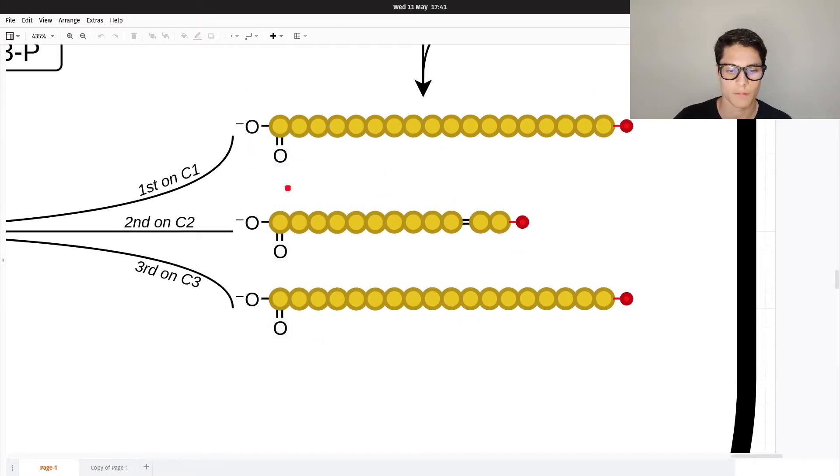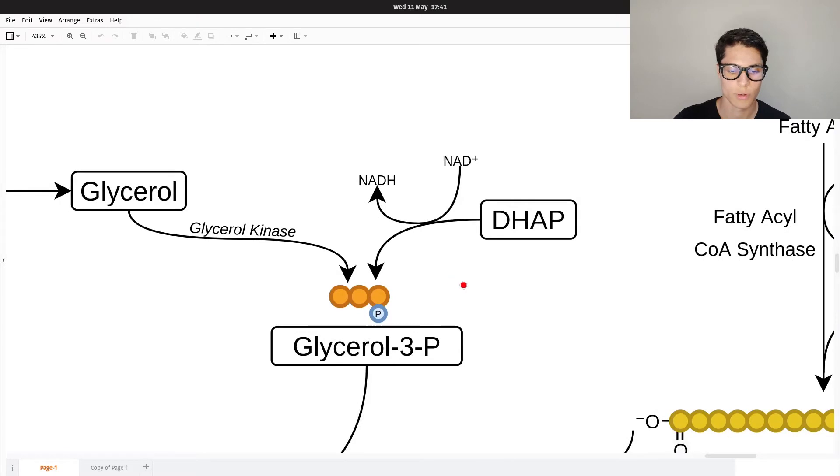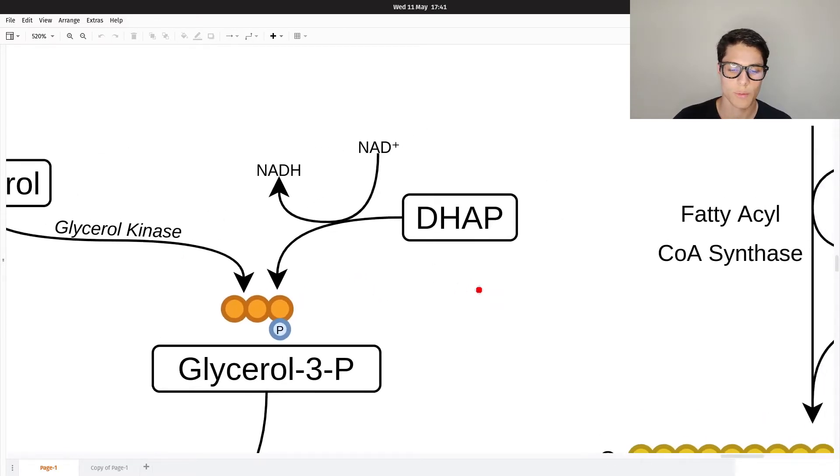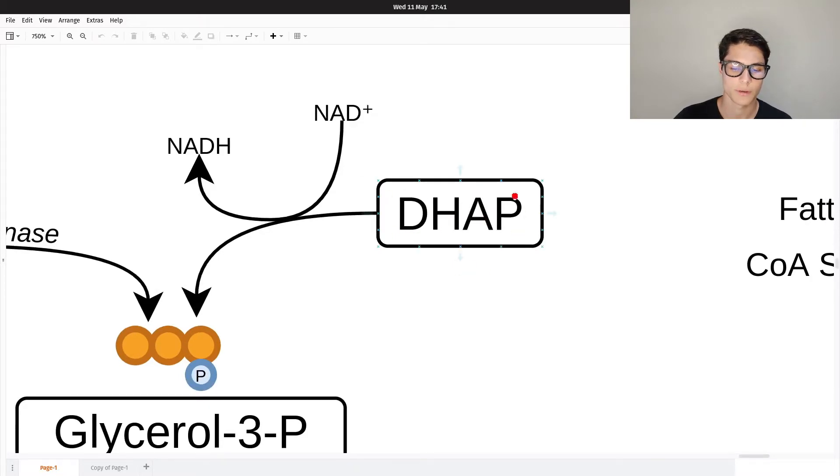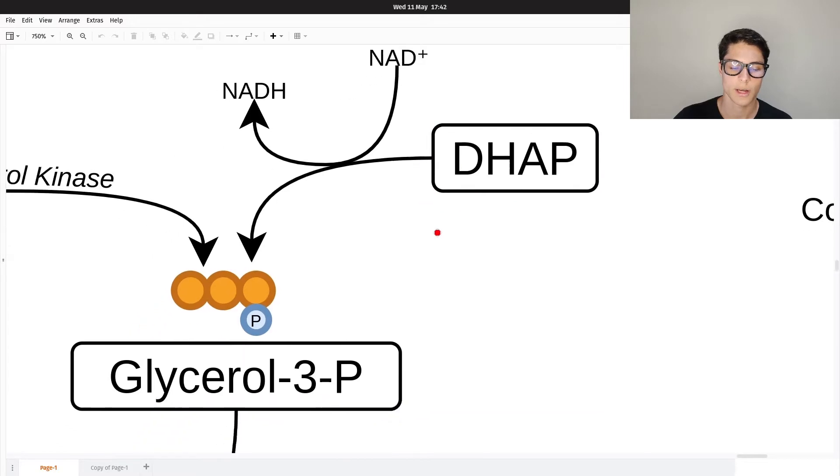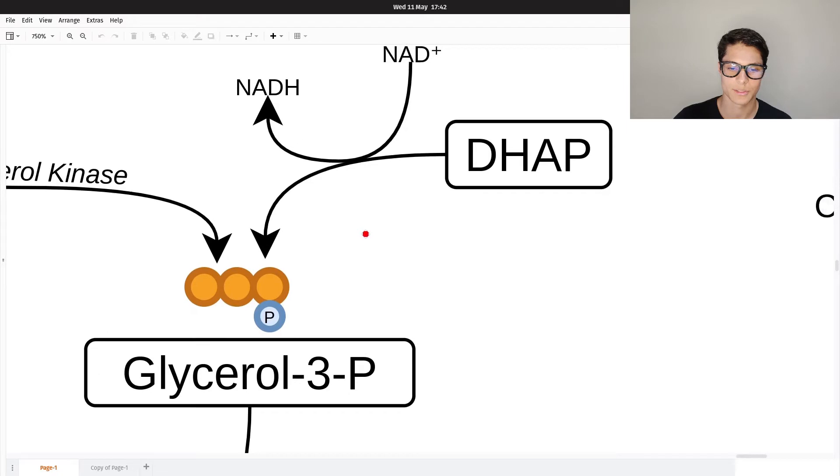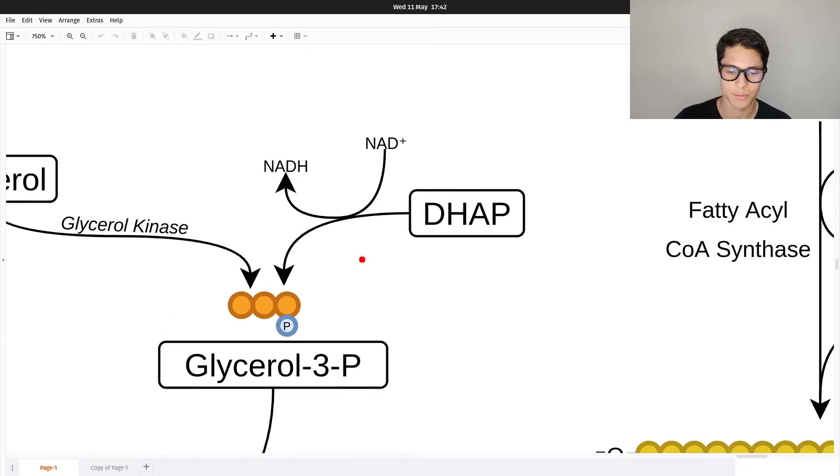We have the fatty acids, but triglycerides have glycerol, so we need the glycerol from somewhere. Do you remember this metabolite from glycolysis, dihydroxyacetone phosphate (DHAP)? It can actually be converted into glycerol-3-phosphate using NAD+, creating NADH. This is actually a step for the glycerol-3-phosphate shuttle.